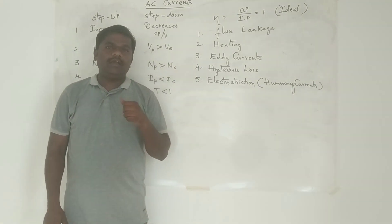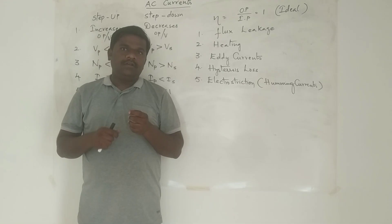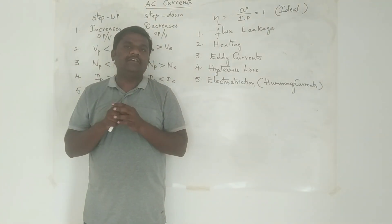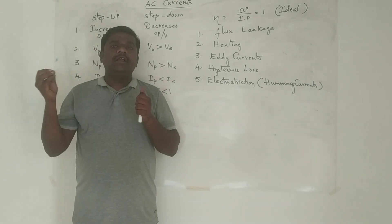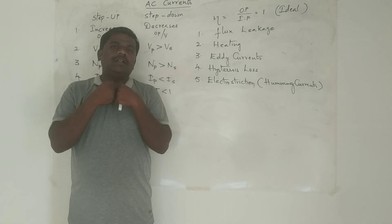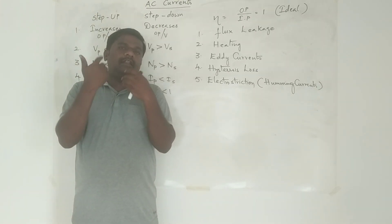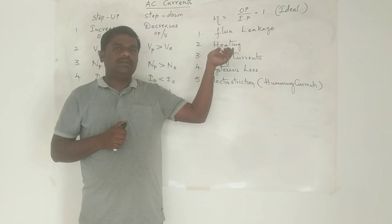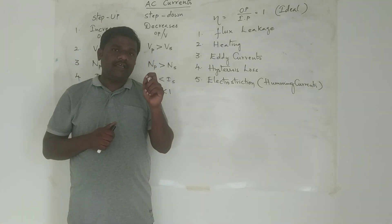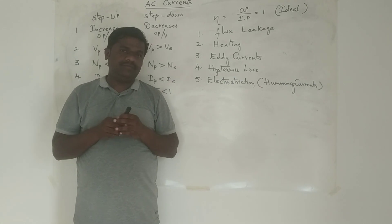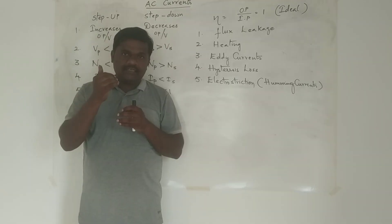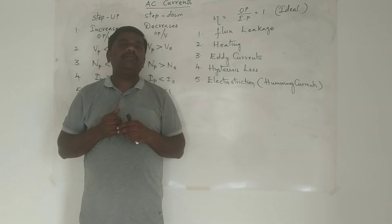The second cause is the heating of the coils. Every coil is made of a wire, and pure inductance is not possible — any inductor will offer certain resistance. Because of this resistance, when AC voltage flows through the coil, some amount of power is converted into heat. That heat energy cannot be retrieved, so some power is lost. To minimize heating of the coils, use a wire with a large area of cross-section — that is, a thick wire — so that it offers less resistance.